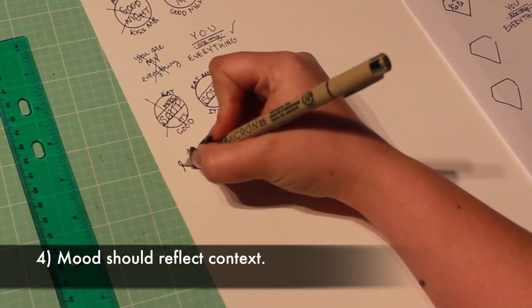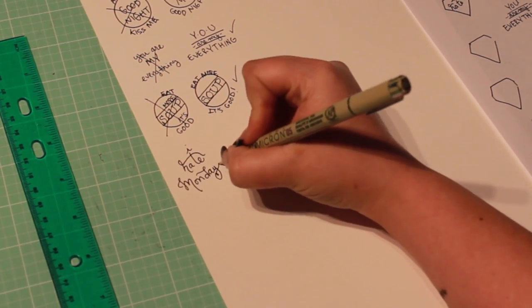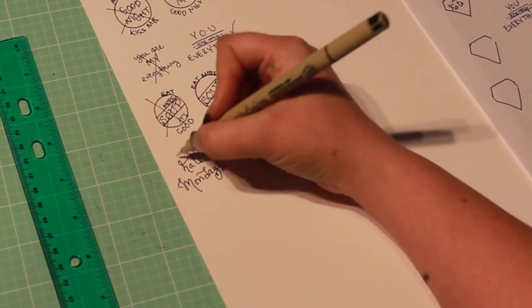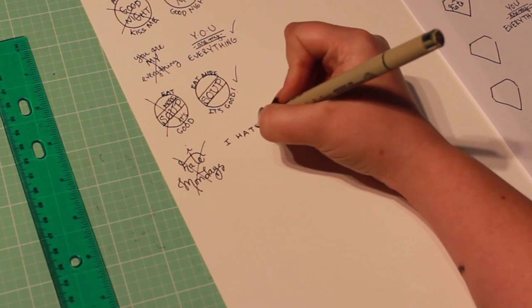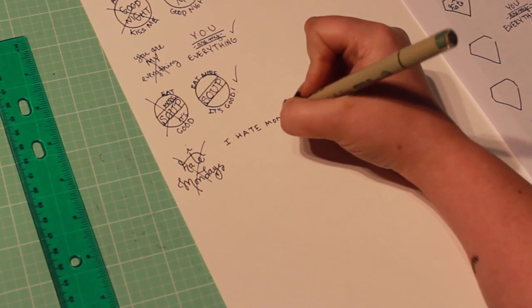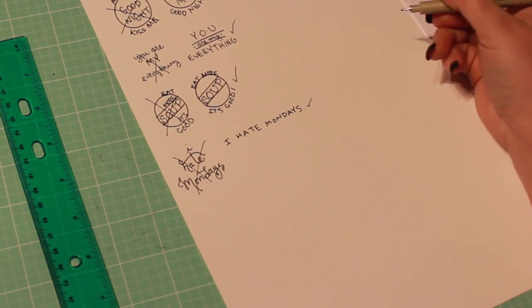Fourth, the mood of your piece should reflect the context of the words. Consider the lettering style, and perhaps the shape of your canvas. This first lettering sketch features a cute script font, which doesn't reflect the mood of the words. Widely spaced, all caps letters do a better job of mirroring the message.